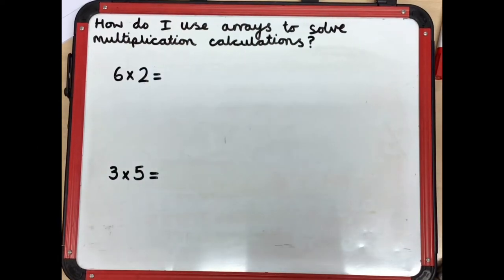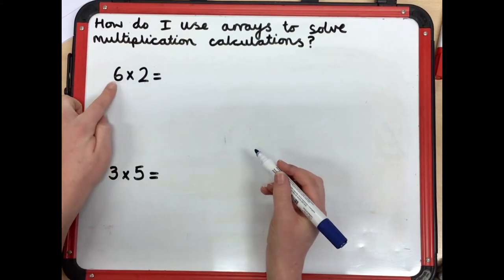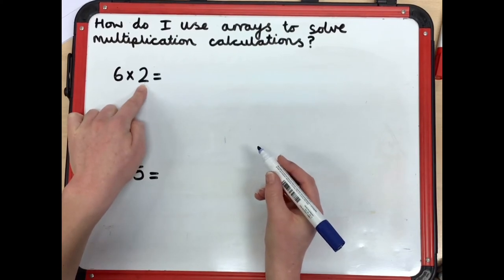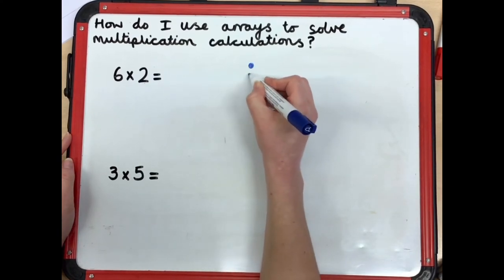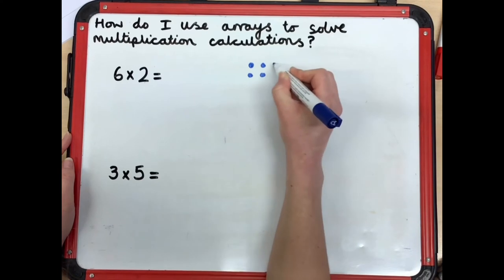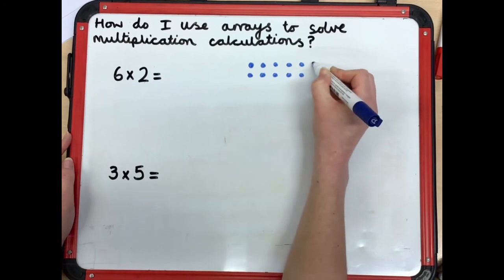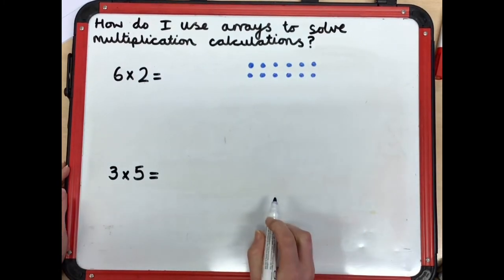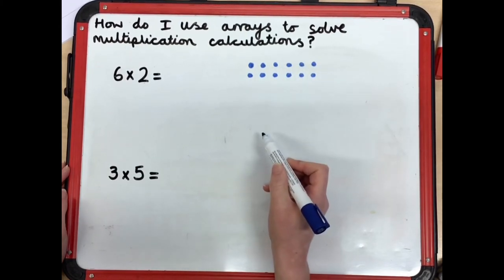Here I've got a multiplication calculation: six times two. I'm going to solve this using an array to either help me or prove my answer. I need to draw six rows, or six columns, with two in each — six groups of two. Count with me as I draw: one, two, three, four, five, six. Just check: I've got one, two, three, four, five, six rows and two in each.